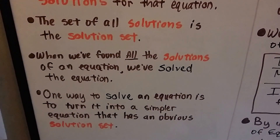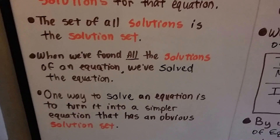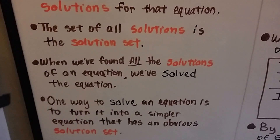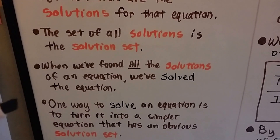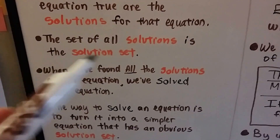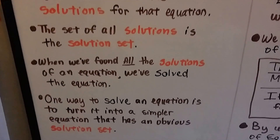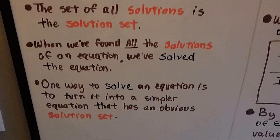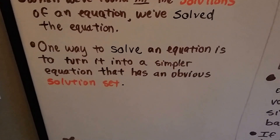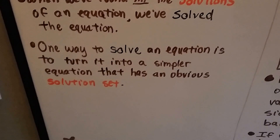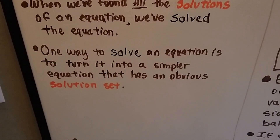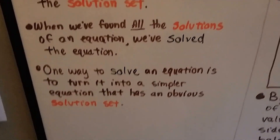All acceptable values that replace a and b are members of the replacement set. The replacements that make an equation true are the solutions for that equation. The set of all solutions is the solution set. When we've found all the solutions, we've solved the equation, and we could list all the solutions in braces. One way to solve an equation is to turn it into a simpler equation that has an obvious solution set.